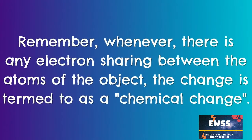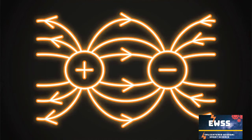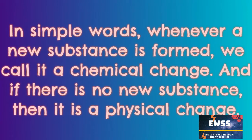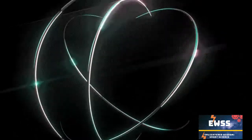So remember, whenever there is any electron sharing between the atoms of the object, the change is termed a chemical change. And what is a physical change? Well, it is the vice versa — if there is no such bonding or electron sharing, then the particular change is termed a physical change. In simple words, whenever a new substance is formed, we call it a chemical change, and if there is no new substance formed, then it is a physical change. But the condition is that these new substances should be altered by atomic activities like electron bonding.